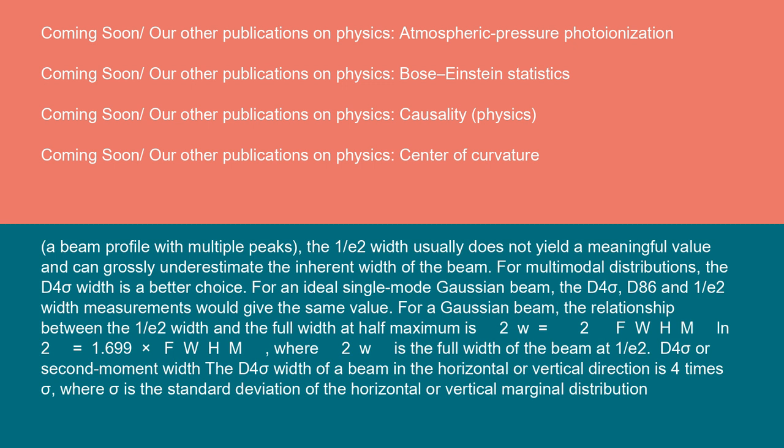For an ideal single-mode Gaussian beam, the D4 sigma, D86, and 1/e² width measurements would give the same value. For a Gaussian beam, the relationship between the 1/e² width and the full width at half maximum is 2w = 2FWHM/√(ln 2) = 1.699 × FWHM, where 2w is the full width of the beam at 1/e².